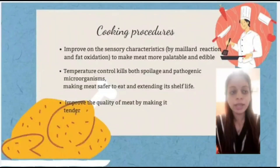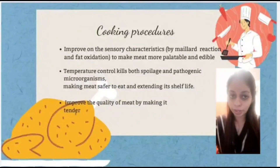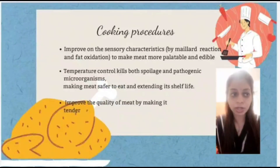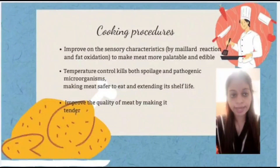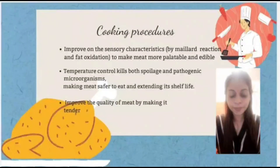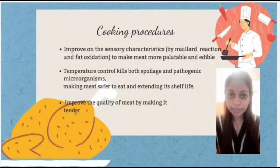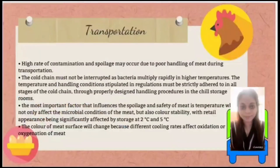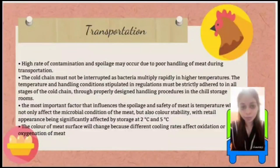Moving to the next slide, which covers cooking procedures. Cooking improves sensory characteristics through Maillard reactions and fat oxidation to make meat more palatable and edible. Temperature control kills both spoilage and pathogenic microorganisms, making meat safer to eat and extending its shelf life. Cooking also improves the quality of meat by making it more tender.